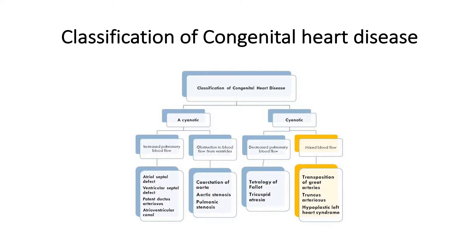Just a recap on the classification of congenital heart disease, which can either be classified as acyanotic or cyanotic, and further sub-classified as those with increased pulmonary blood flow and those with decreased pulmonary blood flow. PDA actually falls under acyanotic with increased pulmonary blood flow.